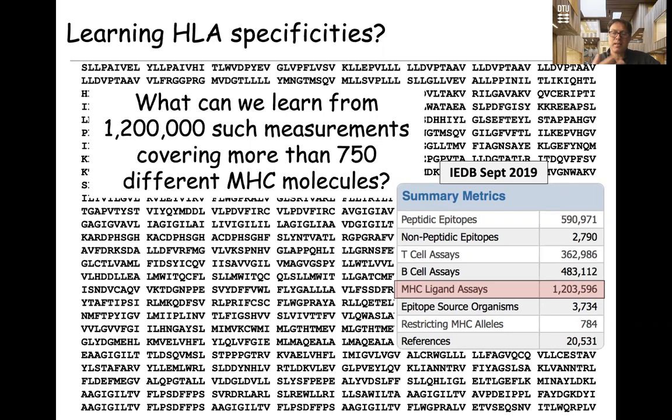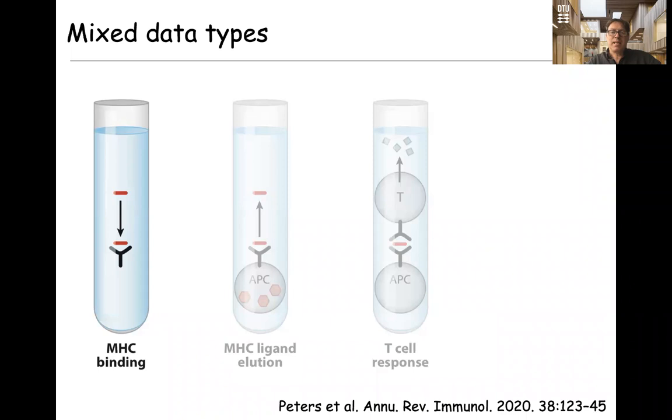Those peptides have a really high information content because they contain information not only about MHC binding, but also all the steps leading up to MHC presentation, including processing and all the interactions with the chaperones interacting with the MHC in the binding event. So by training on mixed data types, we were able to move forward.